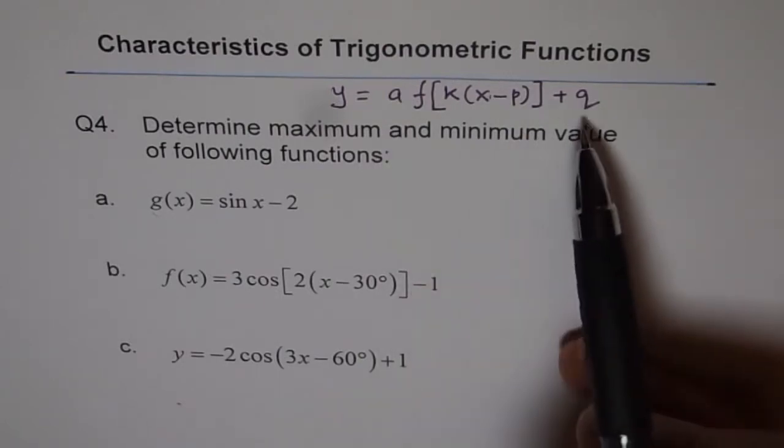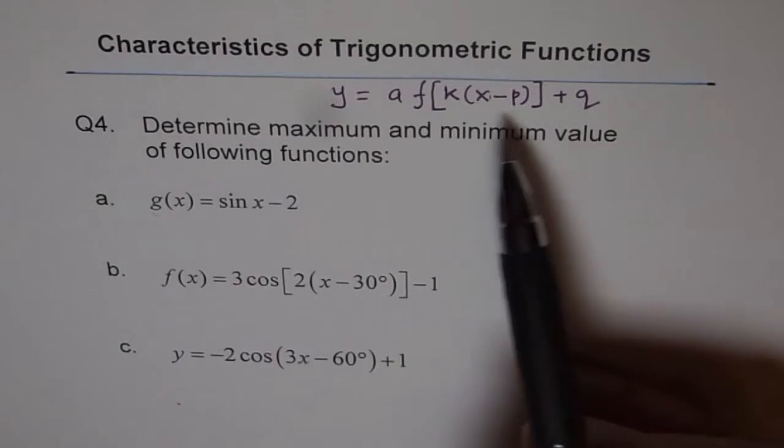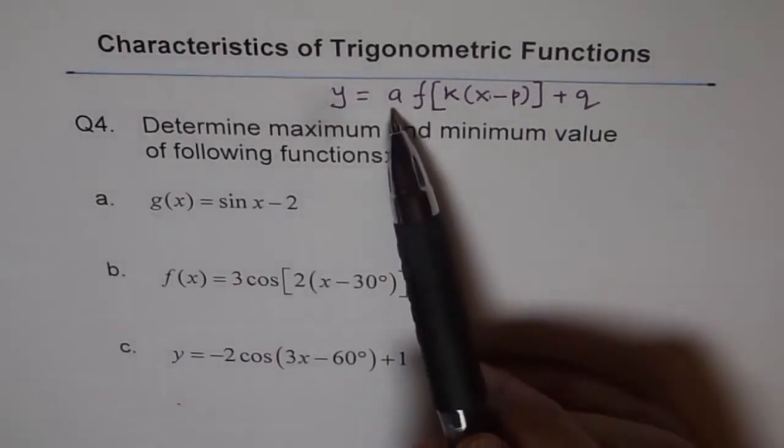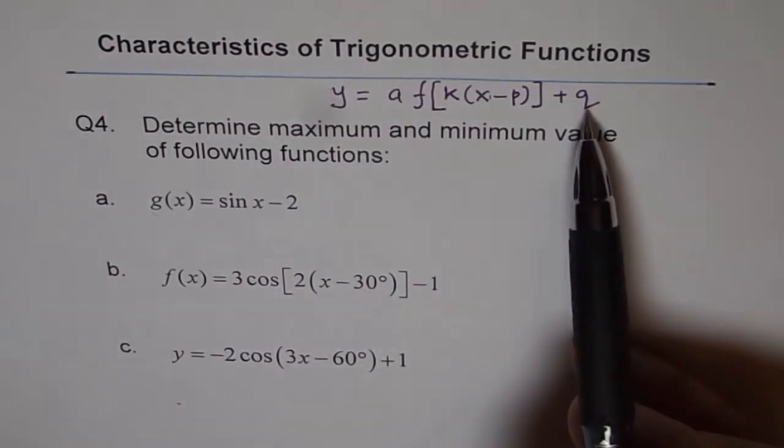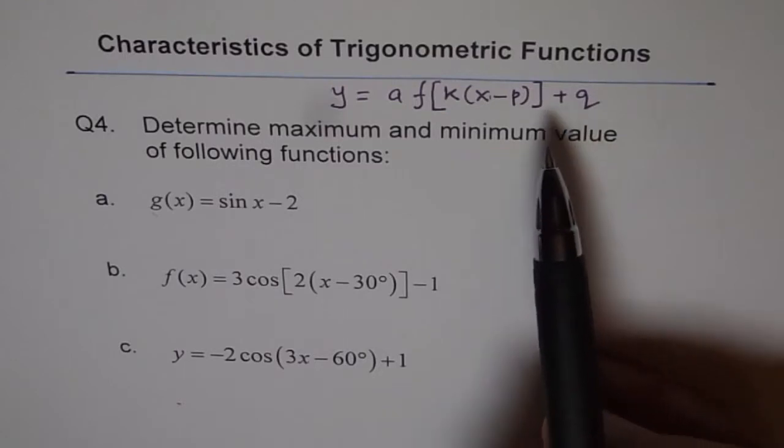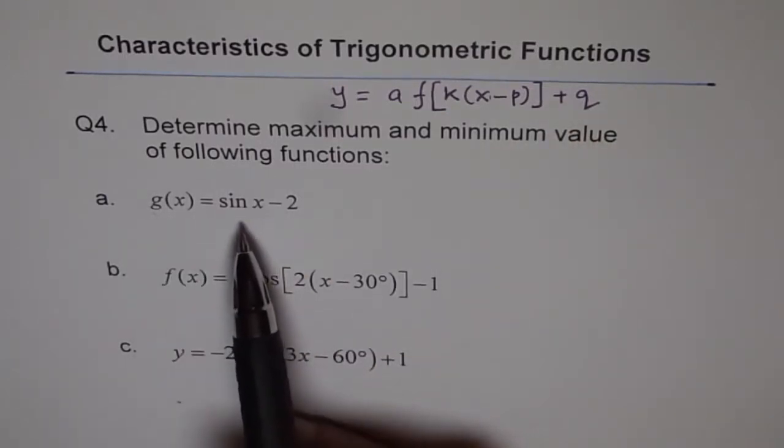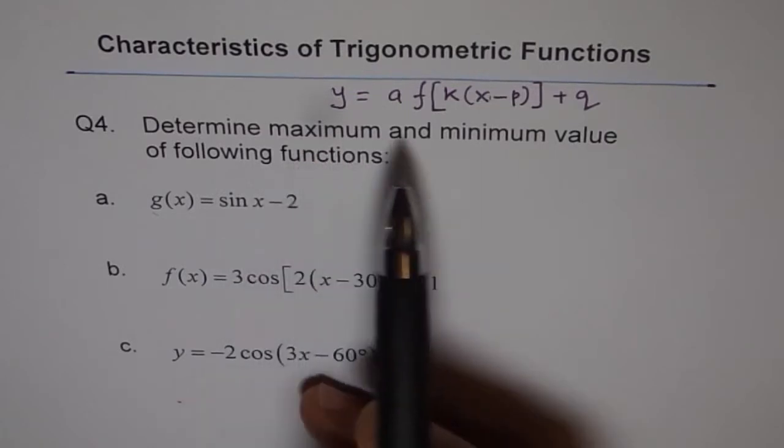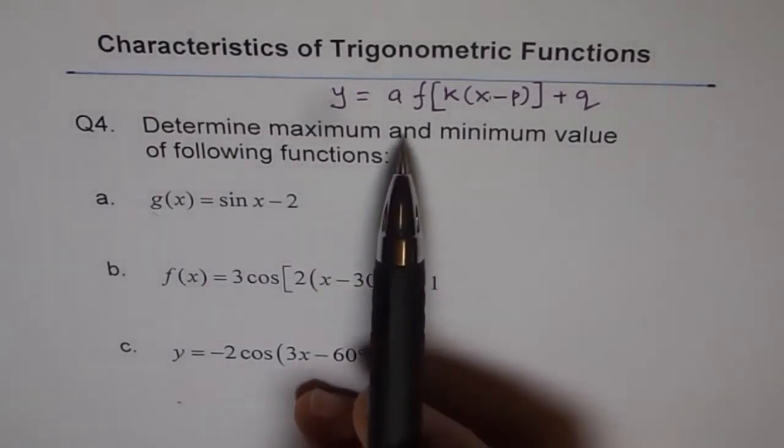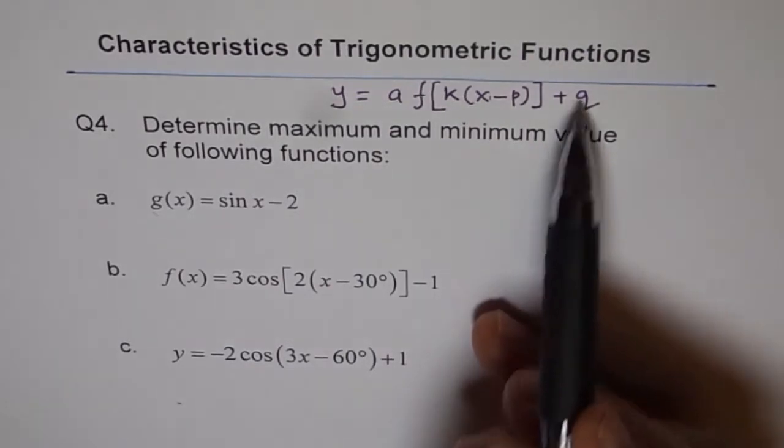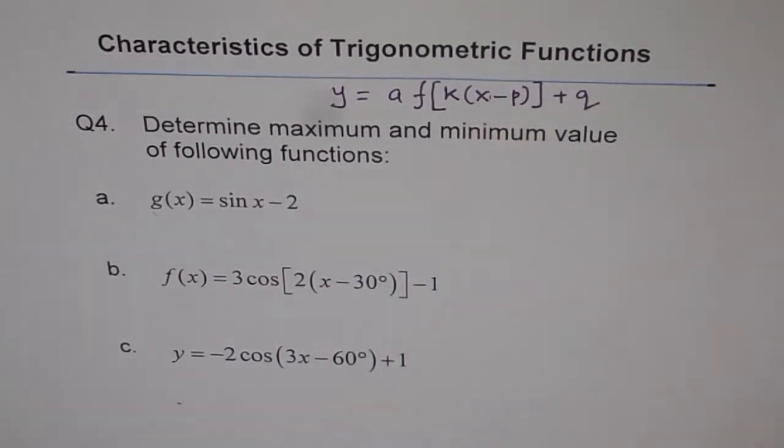In this transformed equation or general equation for a function, a represents the vertical stretch or compression and q represents the vertical translation. Now for a sinusoidal function, whether it is sine function or cosine function, your maximum and minimum values will be a plus q. Why it is so? Let's try to understand that part.